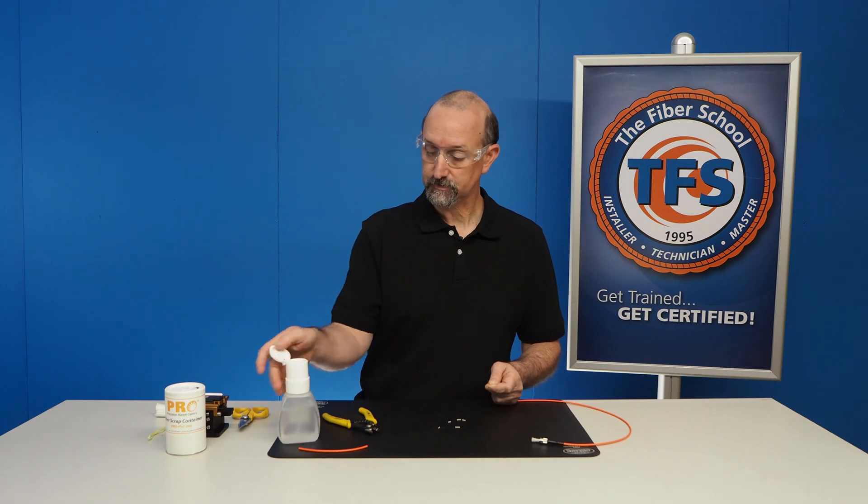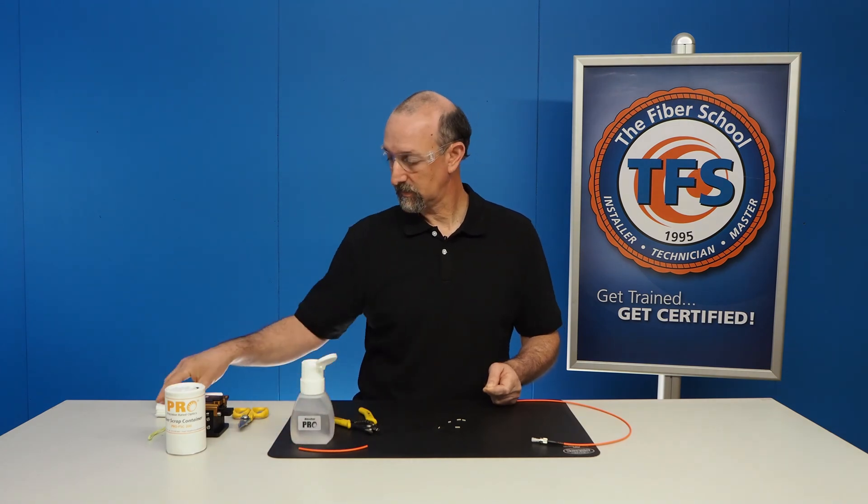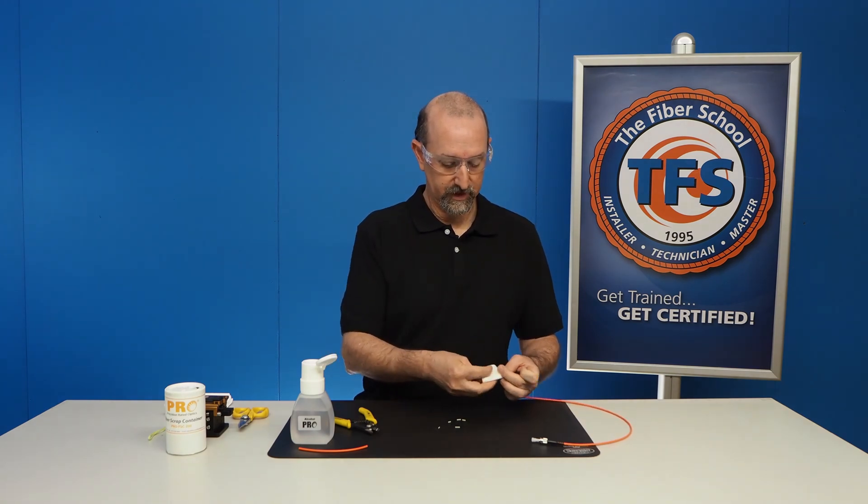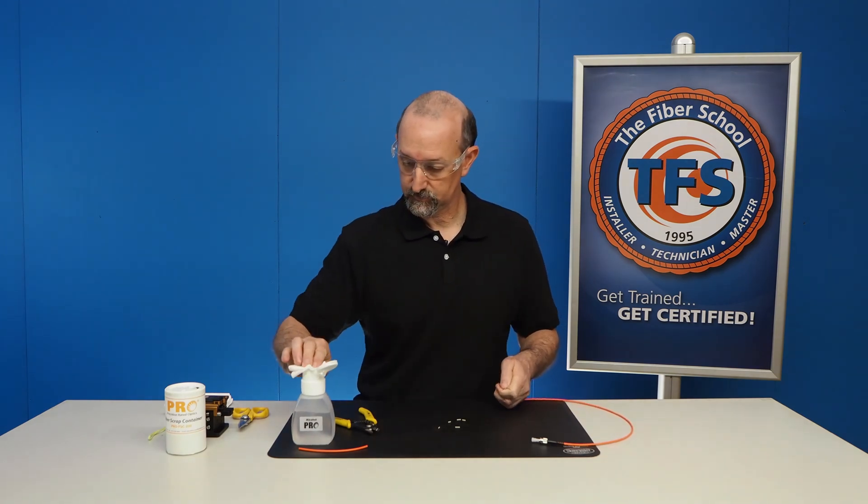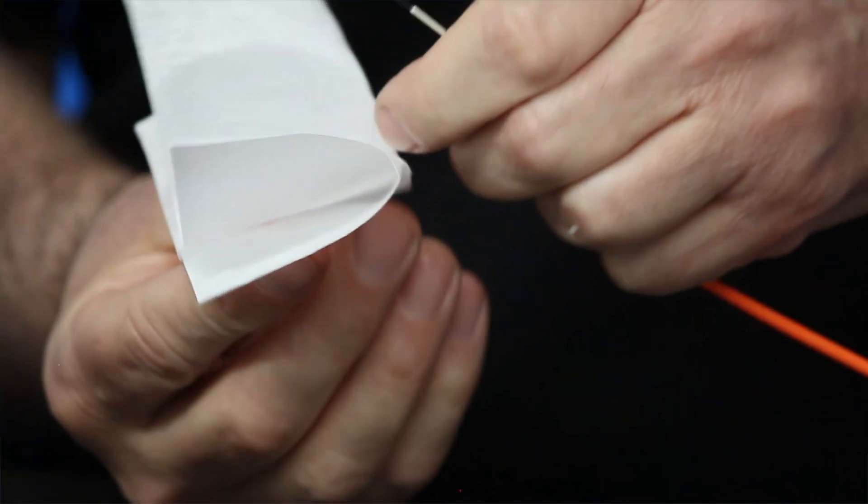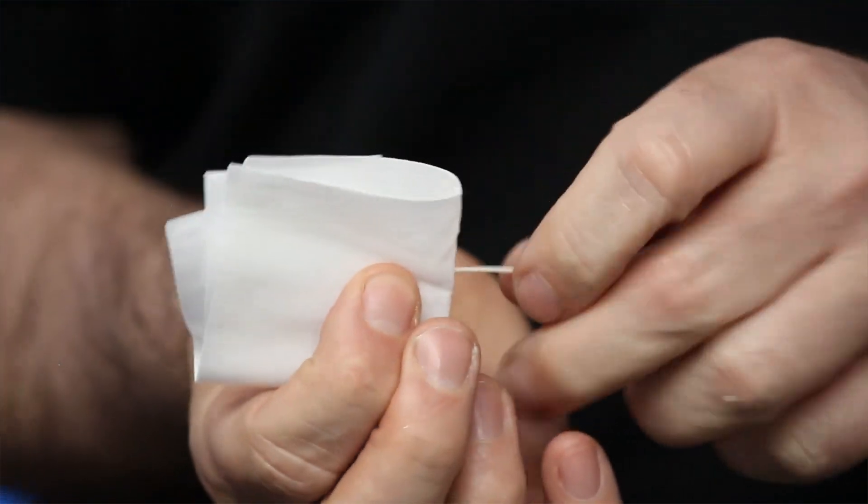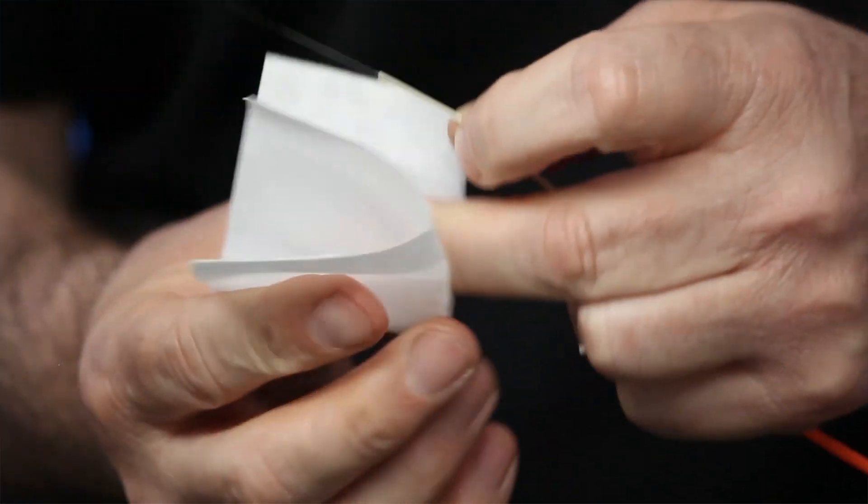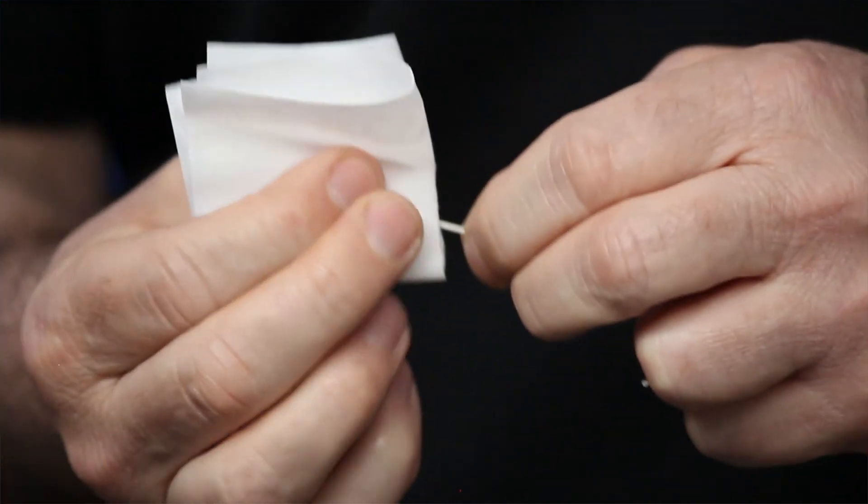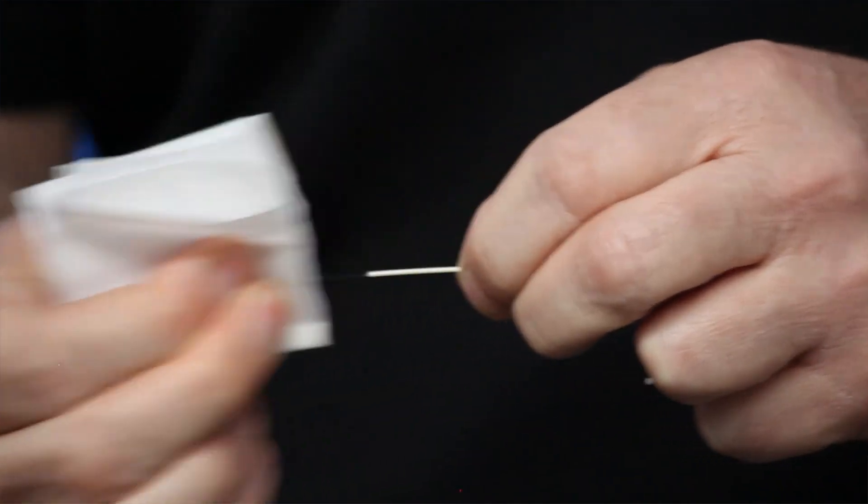And once we slide, now we have to clean it. So we're going to take our alcohol and our lint-free wipe to clean off that acrylate. You can see, go like this, put the fiber in, and draw it away. And that cleans off the fiber. Hear that squeak? That means it's nice and clean.